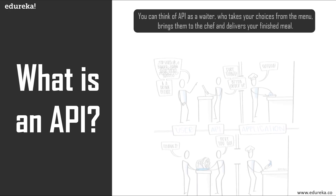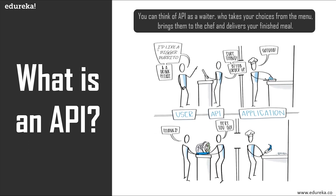To understand APIs better, let's consider a simple example. Imagine you're sitting at a table in a restaurant with a menu of choices to order from. The kitchen is part of the system that will prepare your order. What is missing is the critical link to communicate your order to the kitchen and deliver your food back to your table. That's where the waiter — or an API — comes in. The waiter takes your request to the kitchen and tells them what to do, then delivers the response back to you.